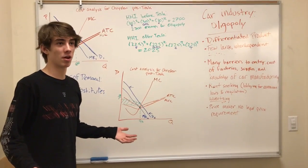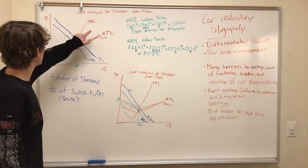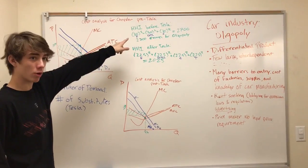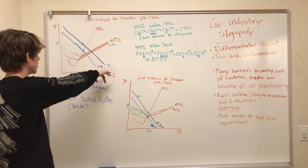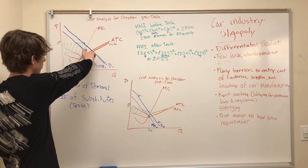So we have the cost analysis of Chrysler before Tesla came into the market. As you can see, their demand and marginal revenue—their demand is above their average total cost, so they're making a large economic profit with this box here.